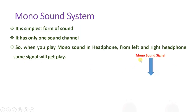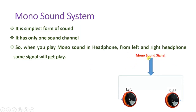If we have a mono sound signal, that same signal is given to the left speaker as well as to the right speaker. So both left and right speakers carry the same sound signal in a mono sound system — it has only one channel signal, and that same signal is fed to both speakers in the headphone.